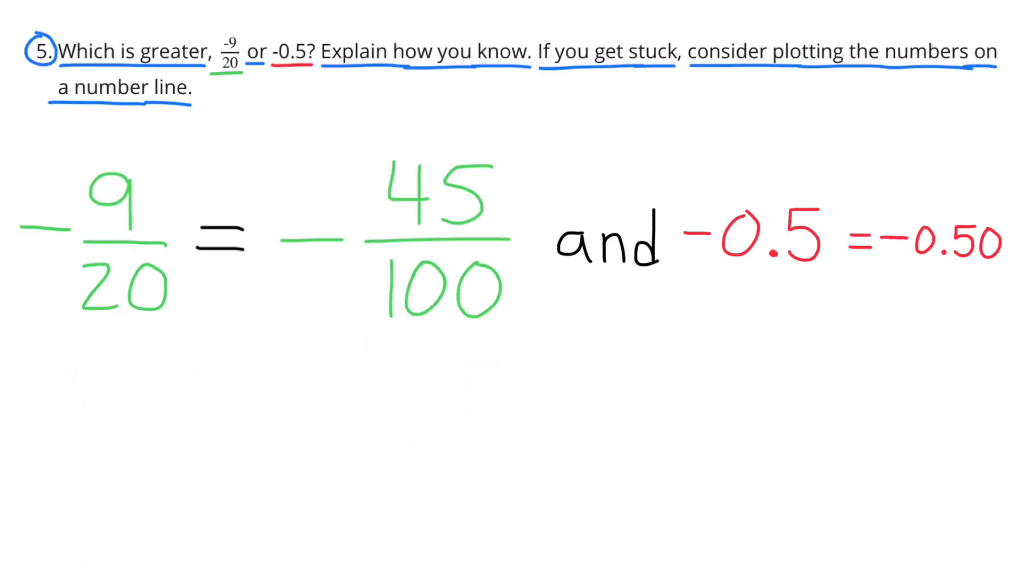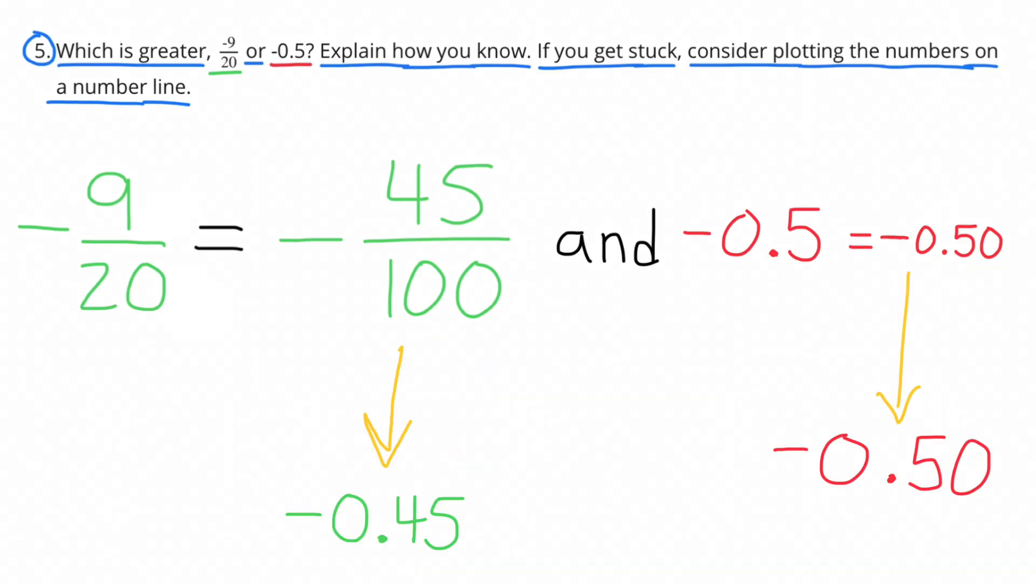And still, I have a fraction on one side and decimals on the other, and it's not so obvious. But I can turn this negative 45 over 100 into negative 45 hundredths just by writing it as a decimal. When negative 45 hundredths is written as a decimal, it becomes much easier to compare to negative 5 tenths, and I've rewritten negative 5 tenths as negative 50 hundredths.